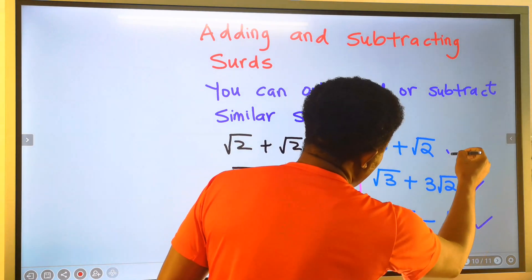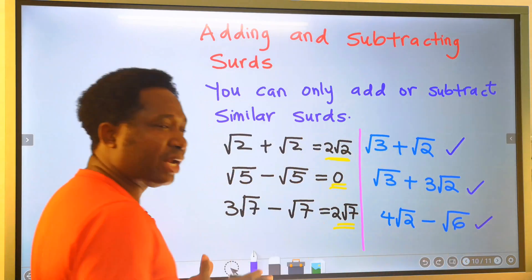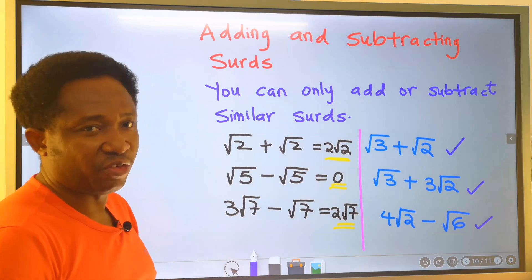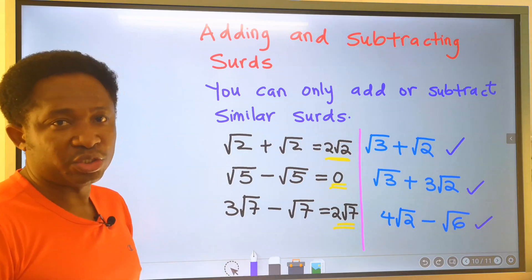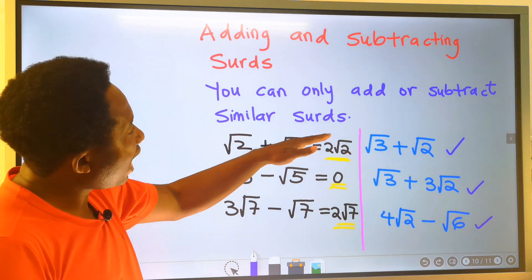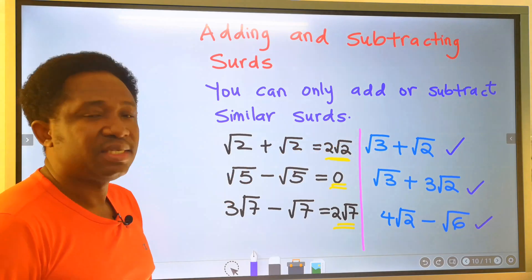Likewise, this and this, we cannot break it down any further. In conclusion, you can only add or subtract similar swords.